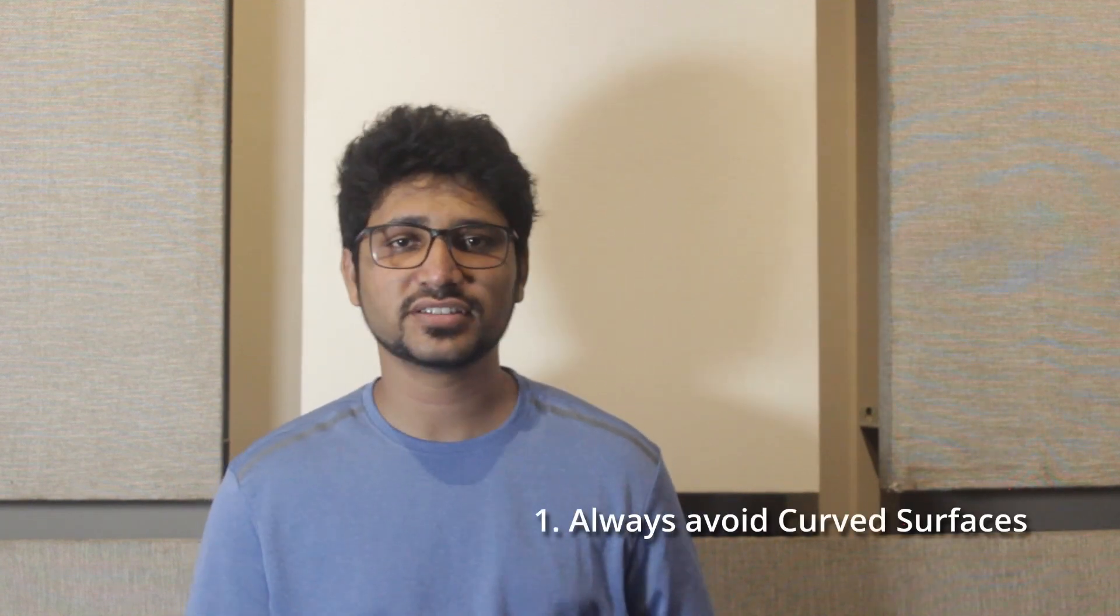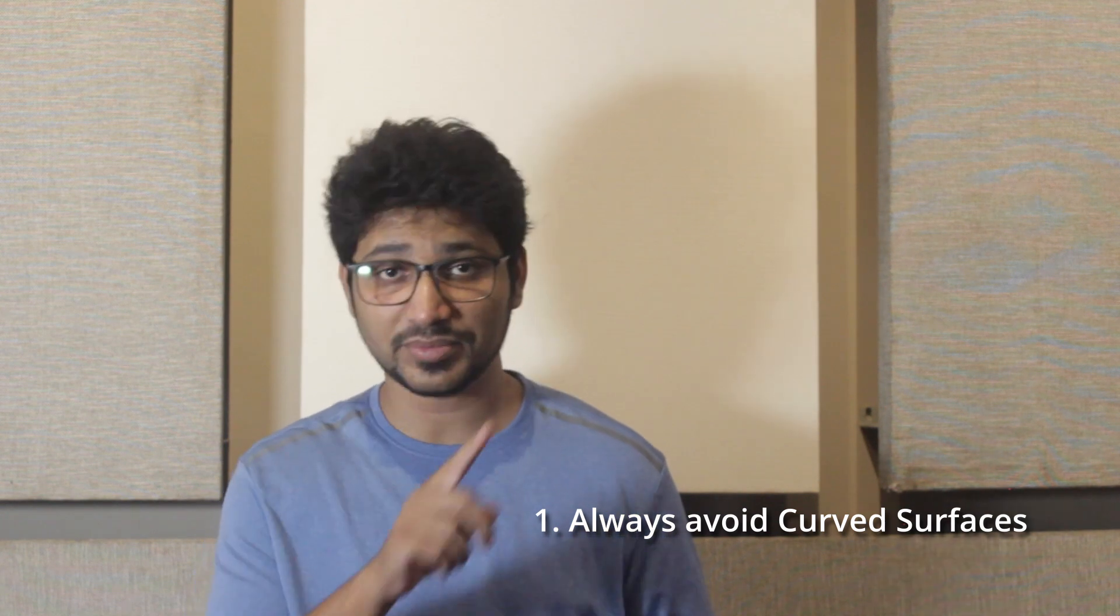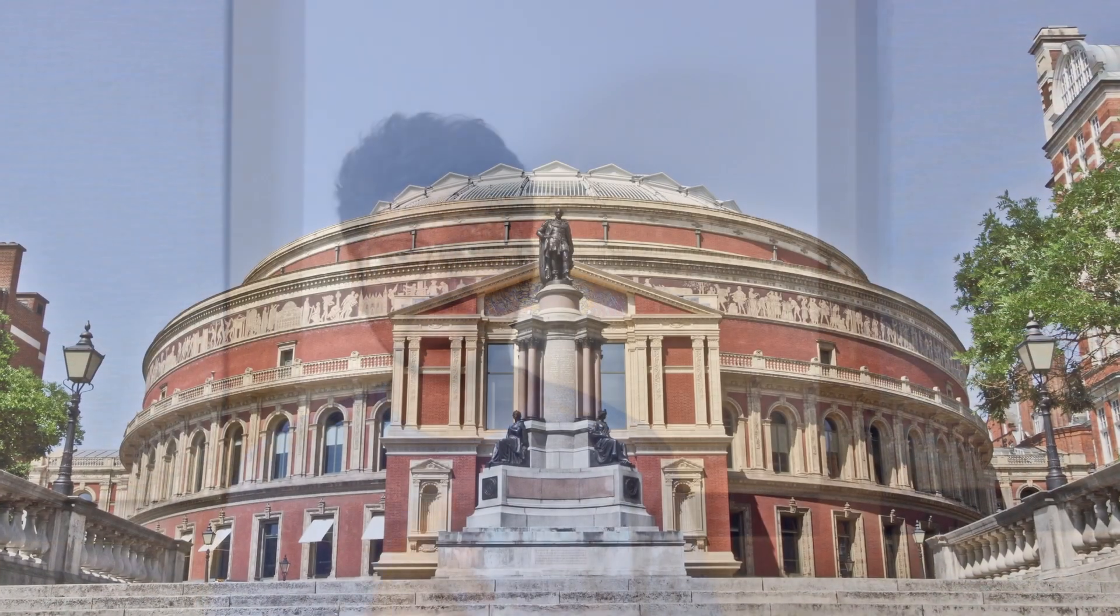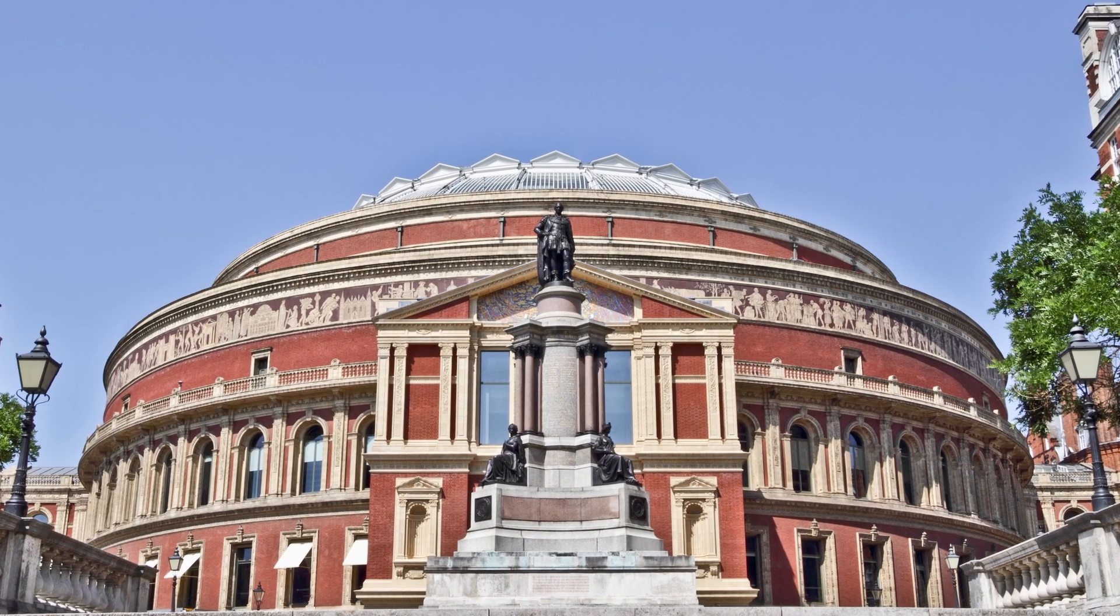Firstly, curved surfaces are the first thing that one should avoid while designing an auditorium. It is a big no-no. Can you guess which world famous performance hall had this issue? The Royal Albert Hall. The Royal Albert Hall had really poor acoustics when it was built. When you take the tour, they also tell you about it and later show you the treatment.